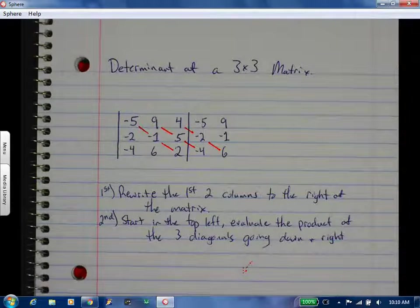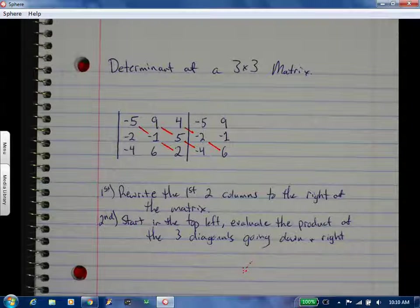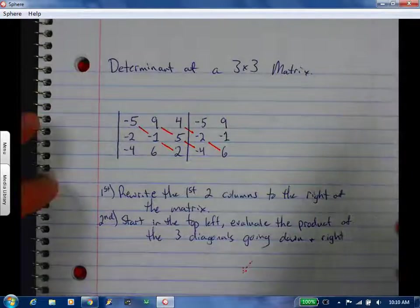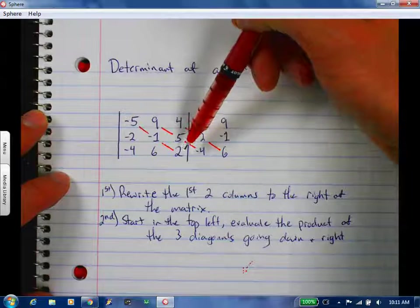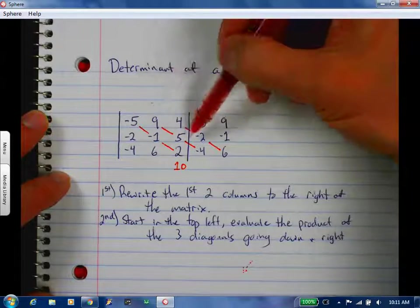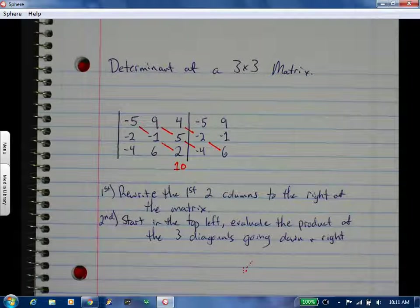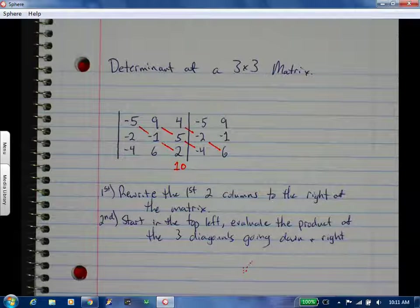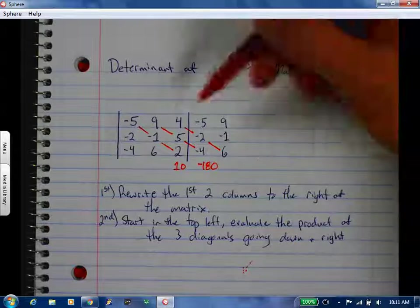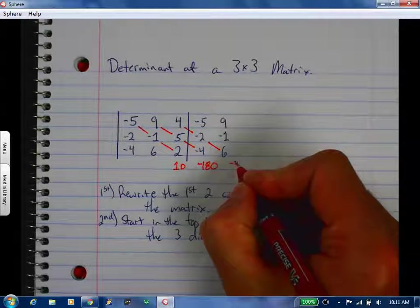And it's the product, so that means on each diagonal we are multiplying those numbers. So negative 5 times negative 1 times 2. Nine times 5 times negative 4. Five times negative 4 is negative 20, times 9 is negative 180. Four times negative 2 times 6. Four times negative 2 is negative 8, times 6 is negative 48.